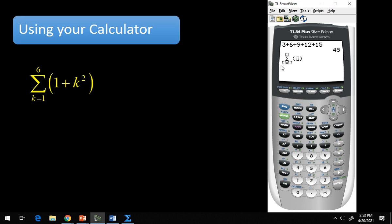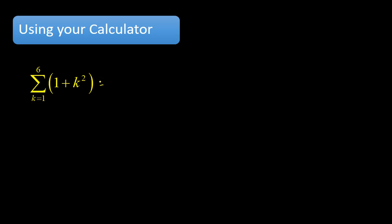Now, for my calculator, everything's in terms of x's. So instead of k, I'm going to use the x. I'm going to go from 1, hit the right arrow, to 6. And then what's important now is the entire function has to be inside these parentheses. So I'm going to put 1 plus x squared in the parentheses and hit enter. And I get my sum to be 97. That means if I wrote out all 6 terms of this, adding them all up, I get 97.